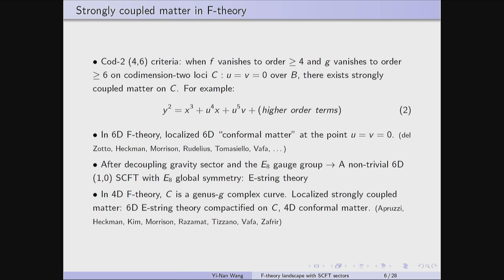In a 4D F-theory picture using the same equation, the codimension-two locus becomes a complex curve — in general a genus-g Riemann surface. In this case, the localized strongly coupled matter on this curve is a 6D E-string theory compactified on the curve C. This is also called 4D conformal matter in the literature, though conformality only appears in the IR — if you just compactify on C it's not conformal, but running to the IR it can become a non-trivial 4D N=1 SCFT.